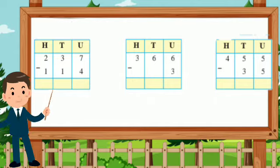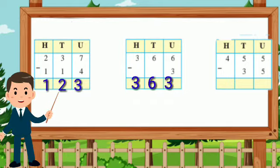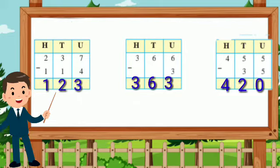Next, 366 minus 3 is equal to 363. Next, 455 minus 35 is equal to 420.